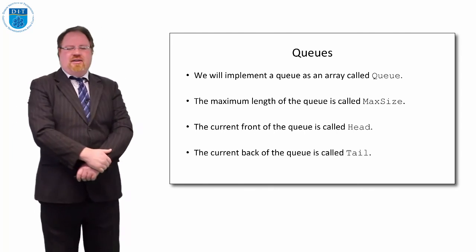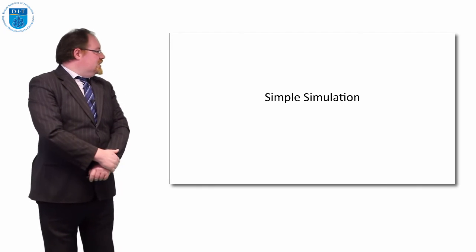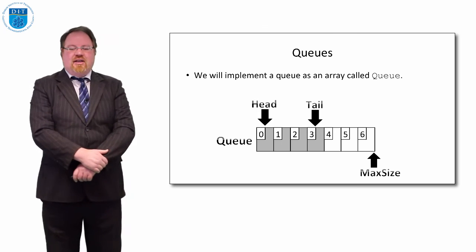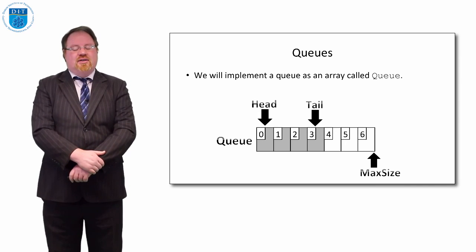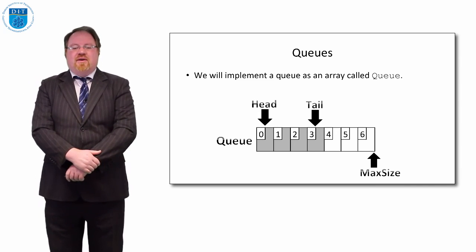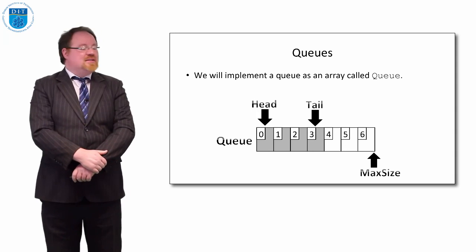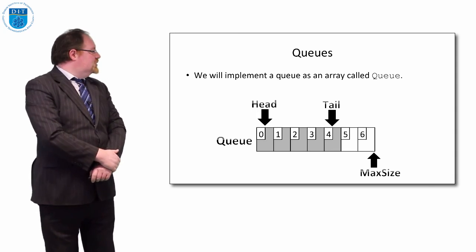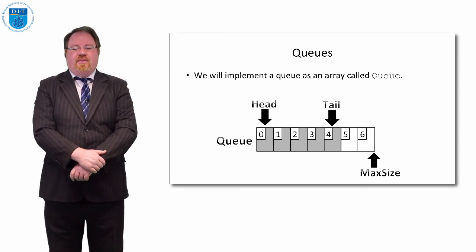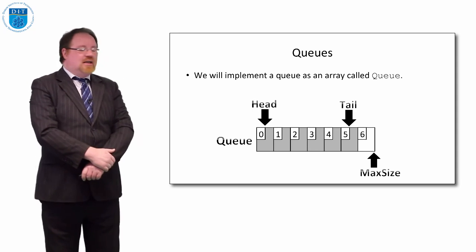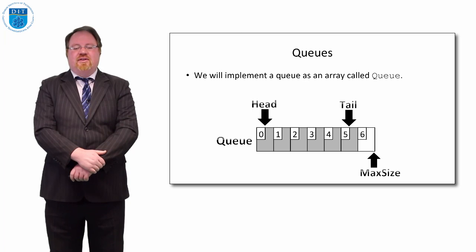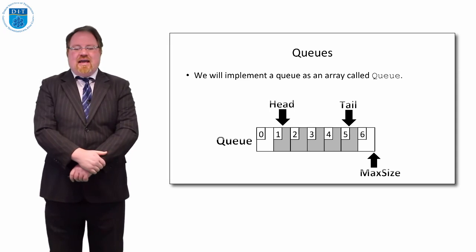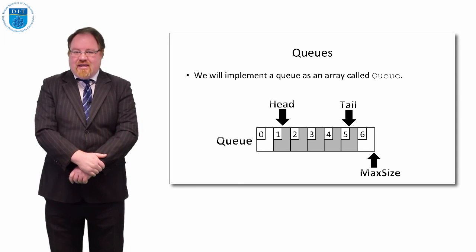Let's look at a simple simulation of a queue. Say the head is at the zeroth element and the tail is at element number three (the fourth element). If I want to add a value, it goes to the tail — moving from position three to four. I can add another value and it moves from four to five. If I want to pop a value out, as you'd say with a stack, we take it off from the head.